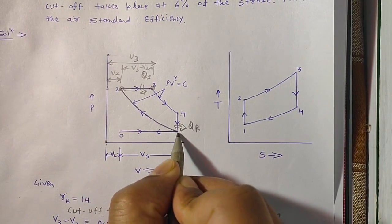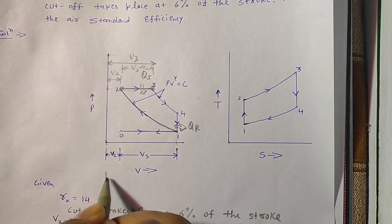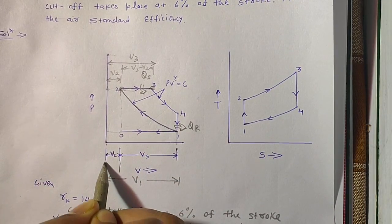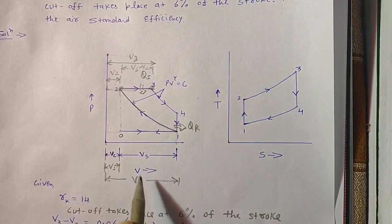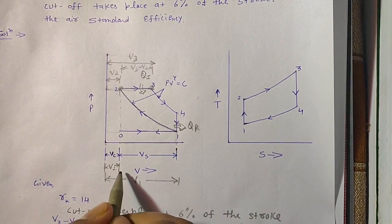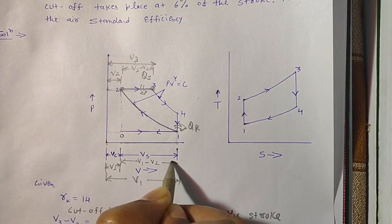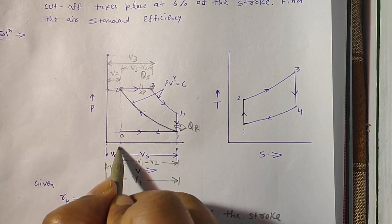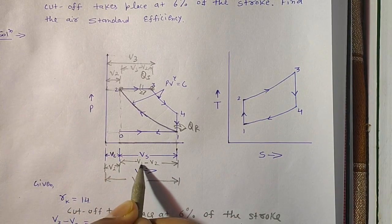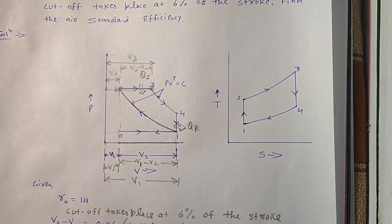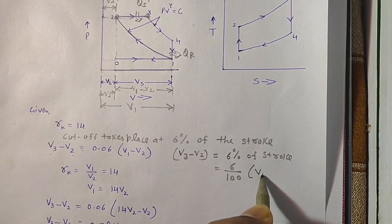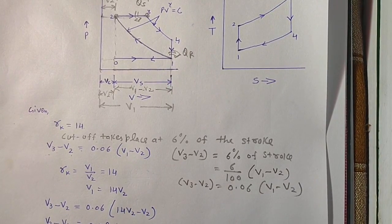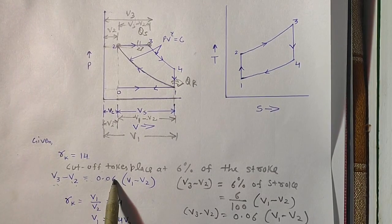The total cylinder volume is V1, and the clearance volume at TDC is V2. The stroke volume is V1 minus V2 — this is the distance traveled by the piston from TDC to BDC. Therefore, V3 minus V2 equals 0.06 times (V1 minus V2).